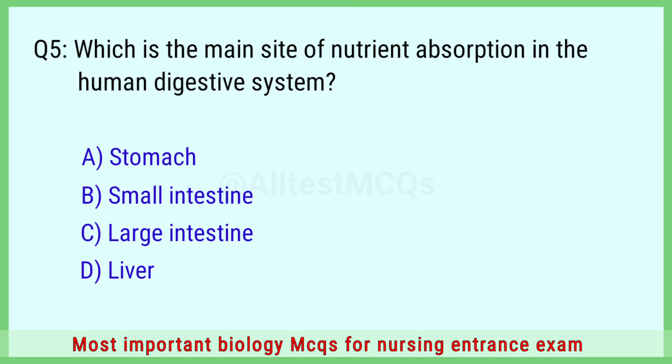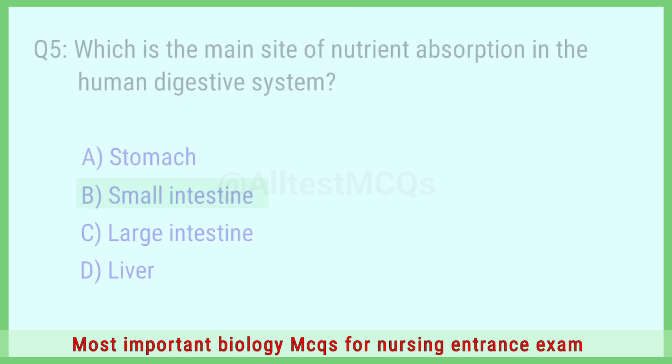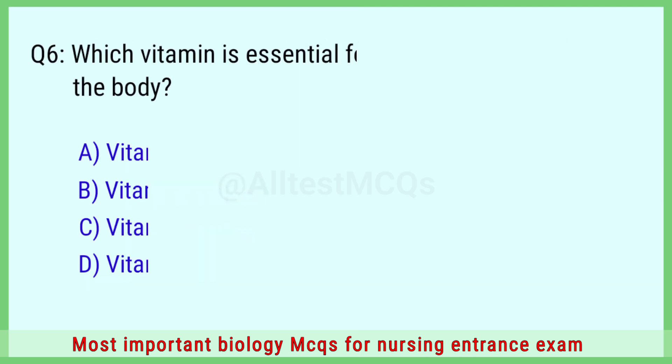Question number 5: Which is the main site of nutrient absorption in the human digestive system? The right answer is option B: small intestine.